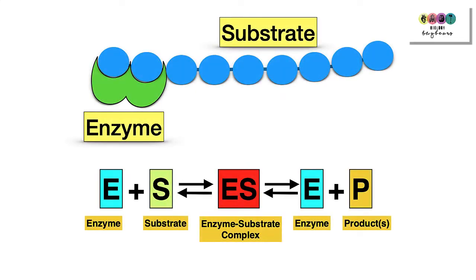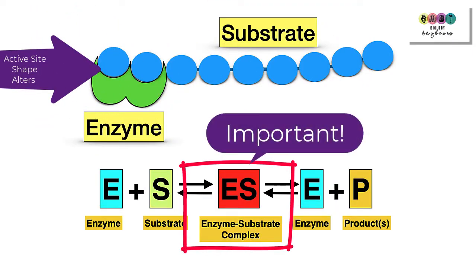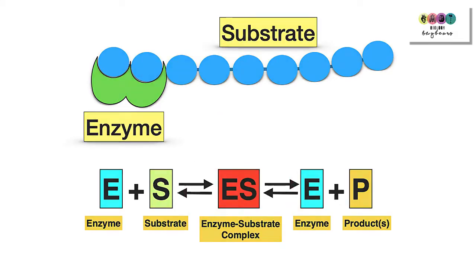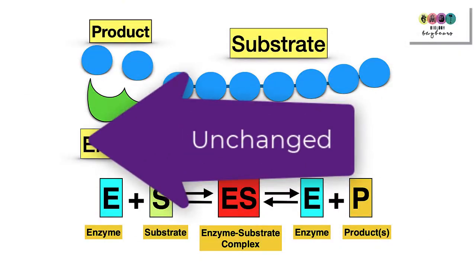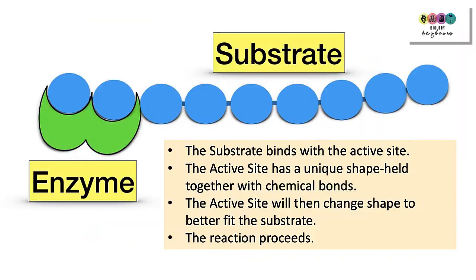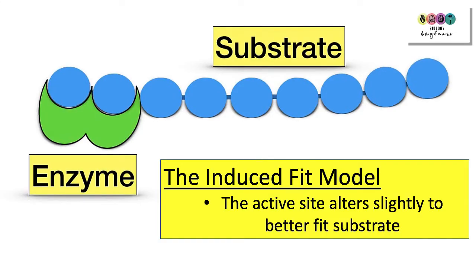The substrate binds with the active site of the enzyme, and the active site actually changes shape slightly to better fit the substrate. At this stage an enzyme-substrate complex is formed, and this is where perfect conditions force the reaction to proceed. At the end you have your enzyme unchanged and your newly formed products. The substrate molecules are what get converted into products — either built up or broken down — and the active site shape is held together by chemical bonds.